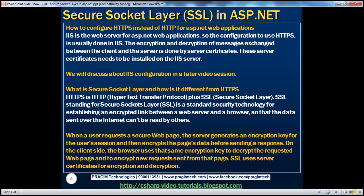How do you configure HTTPS instead of HTTP for an ASP.NET web application? ASP.NET web applications are typically deployed to IIS. The configuration for a web application to use HTTPS or HTTP is done in IIS. Encryption and decryption are performed by server certificates, so we need to generate and install those server certificates in IIS and then configure IIS accordingly. We'll cover that in a later video session.